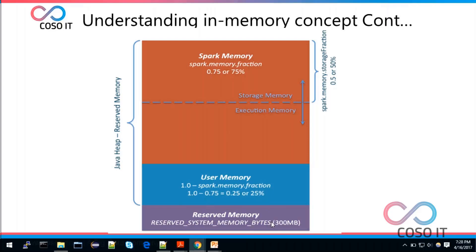As you can see, 300 MB of memory is reserved — taken by the Spark system as reserved memory. The user memory fraction is 25 percent, which is also a memory portion taken for a particular user's driver program or driver execution.